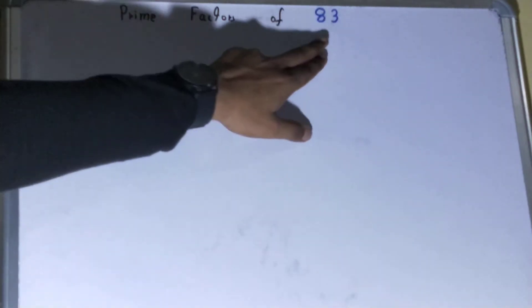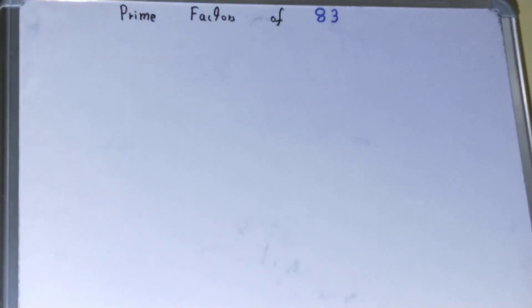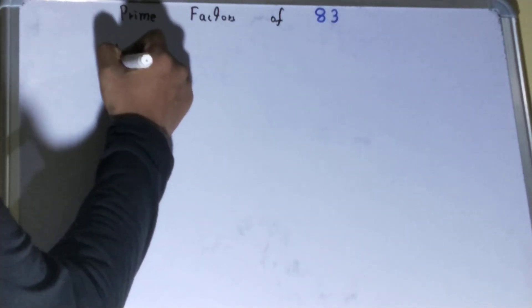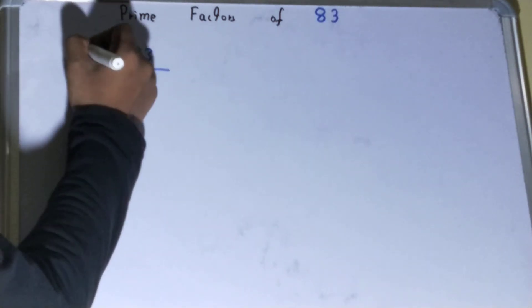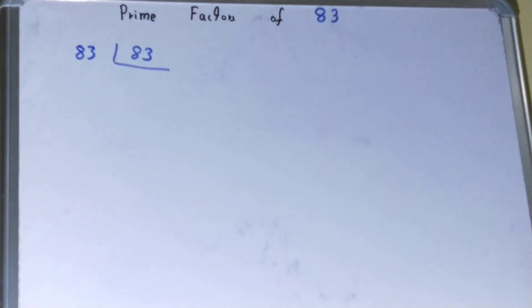say that the prime factors of 83 is the number itself, that is 83. But still in exam or in school you need to show it also, right? So to show it you can write it like this. And because 83 is a prime number, you can write it on the left hand side also. And when you will do